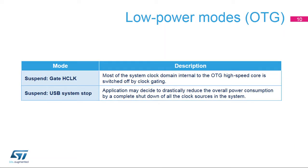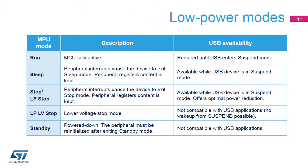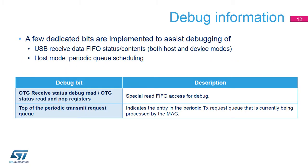Low power modes for the high-speed core are available when USB suspend is active in device mode. The USB OTG peripheral is fully active in run mode. During USB suspend, sleep, stop, and LP stop modes may be used. Within the USB module, certain dedicated bits are implemented to allow debug functionality in a USB application. They relate to FIFO status and contents and the scheduling of periodic queues in host mode. Additional details of these debug bits are listed in this table.